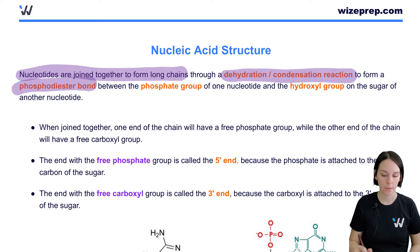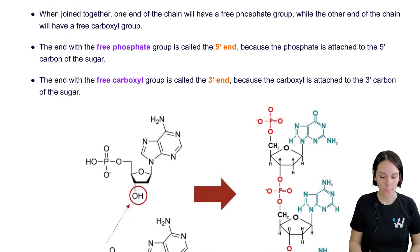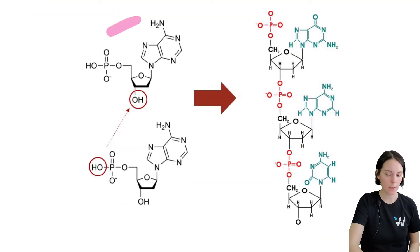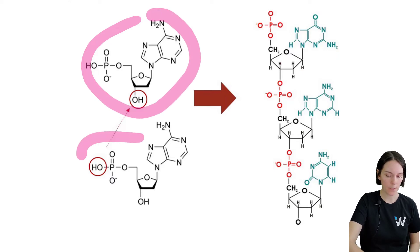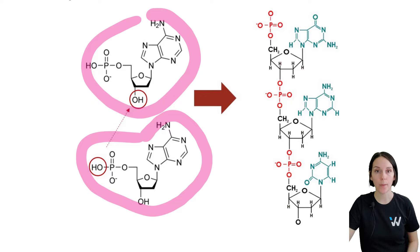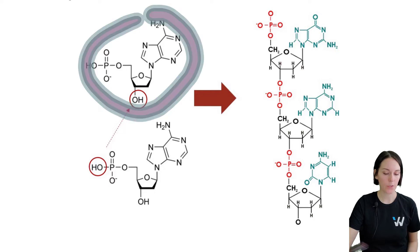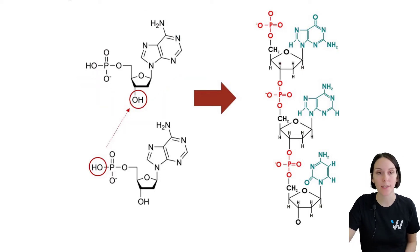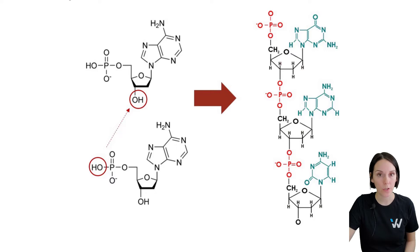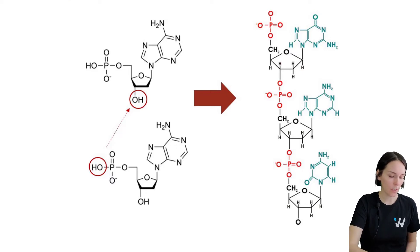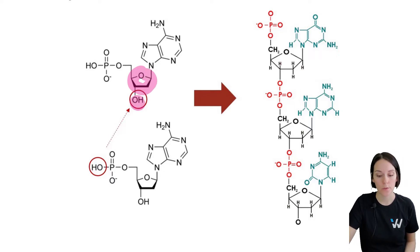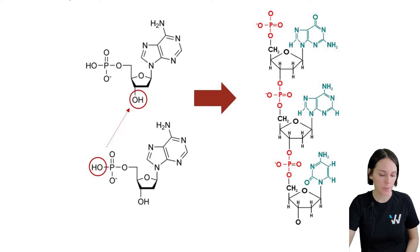The bond that's formed is called a phosphodiester bond. Looking at the diagram, we have two nucleotides here that we're going to join together to form a nucleic acid. Let's look at these nucleotides and figure out if we're looking at DNA or RNA. DNA is deoxyribose, meaning one of those oxygens is removed, and here on our sugar we have just one hydroxyl group — so we're looking at DNA, not RNA.